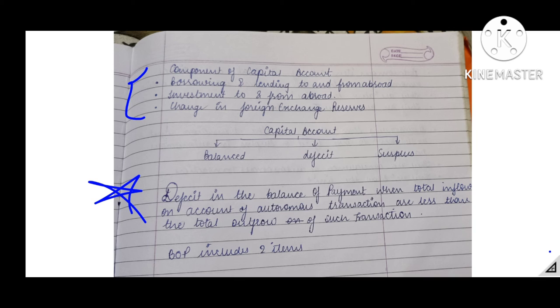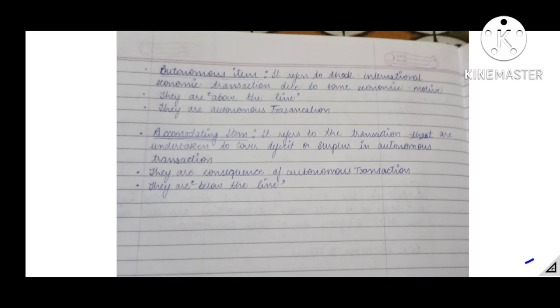Now talking about deficit in the Balance of Payment: it occurs when the total inflow on account of autonomous transactions is less than the total outflow of such transactions. Basically, Balance of Payment deficit is related to autonomous transactions. Autonomous transactions are international economical transactions — involving goods, services, unilateral transfers, or income payments — which are made independently in an economy for profit or other motives.